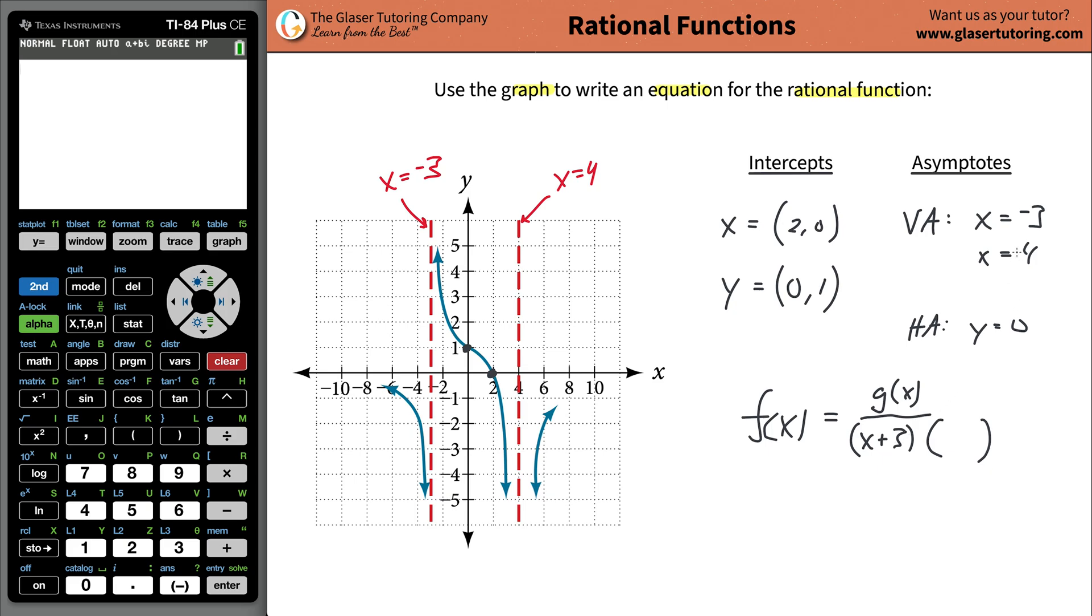These vertical asymptotes give you insight into the values you're plugging into the denominator. If I create the expression x plus 3, then if I plug in negative 3 for x, this whole term becomes zero. That's how I get my zero in the denominator. You can do the same thing with the other vertical asymptote: x minus 4. The shortcut is to take those vertical asymptotes and create factors like finding factors from roots with quadratics.